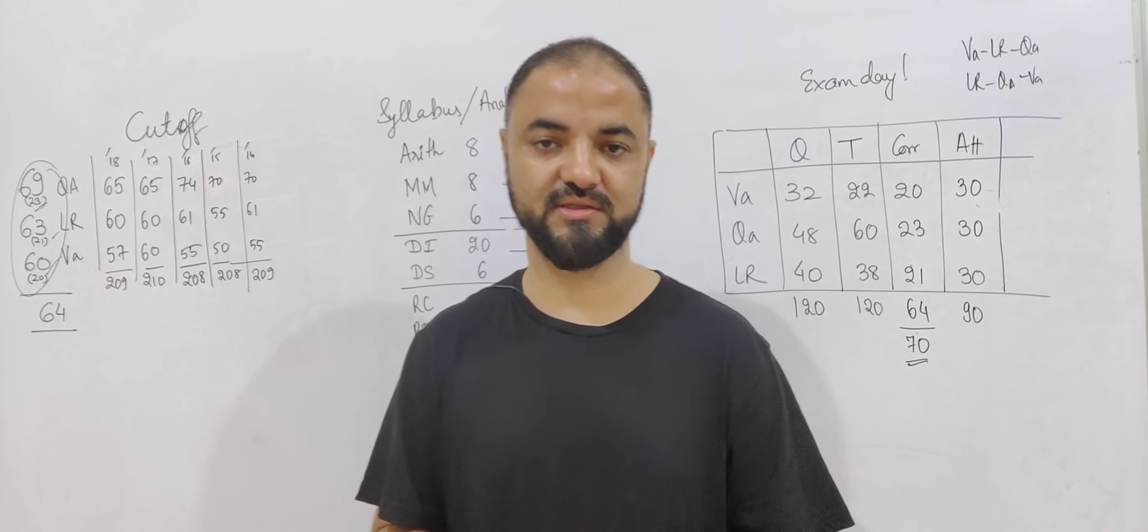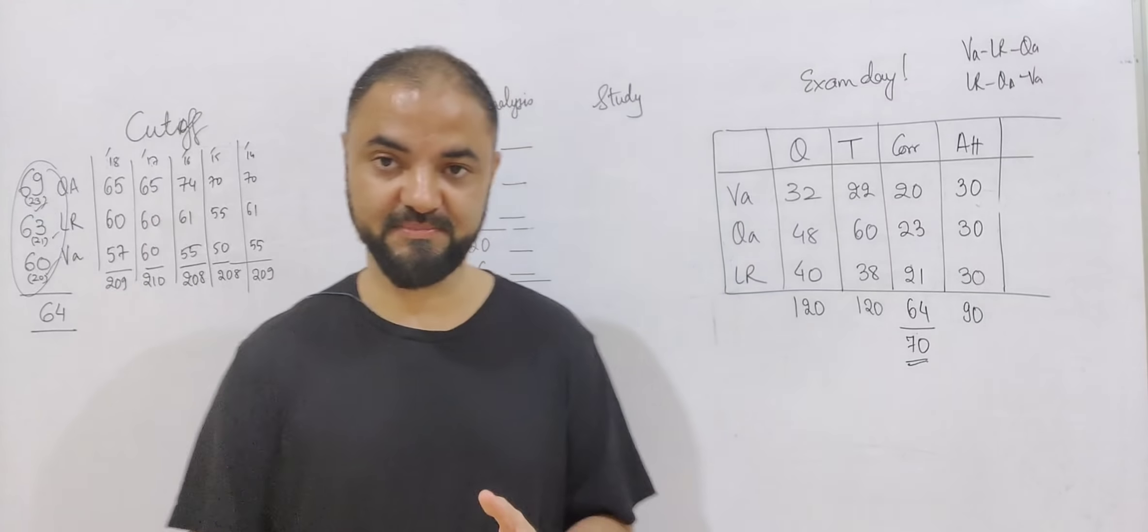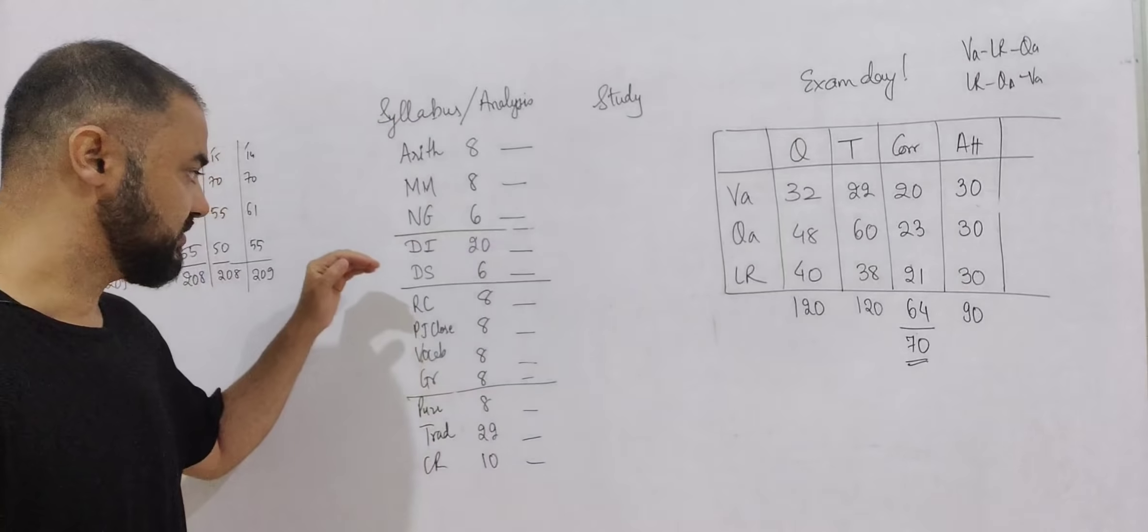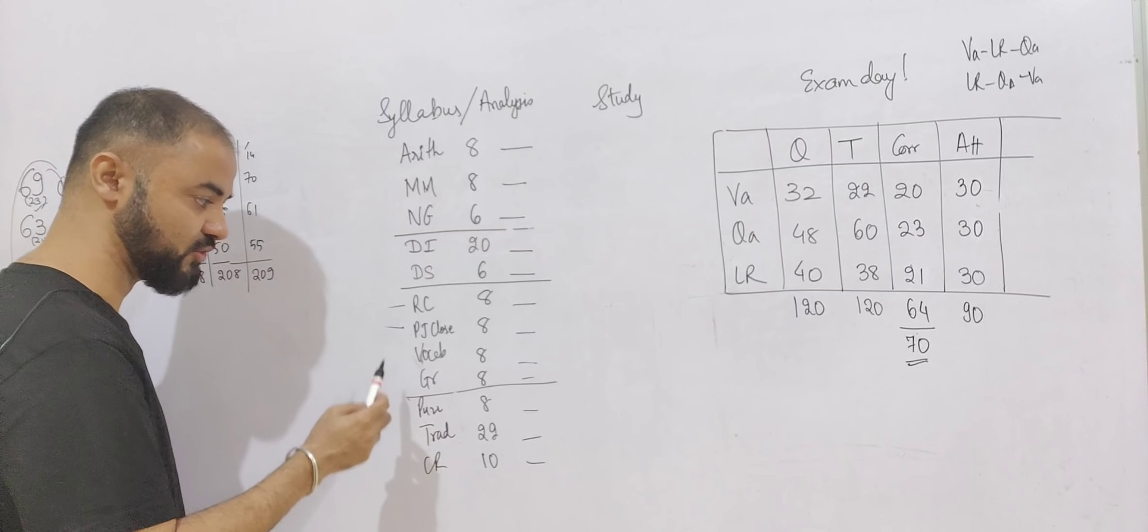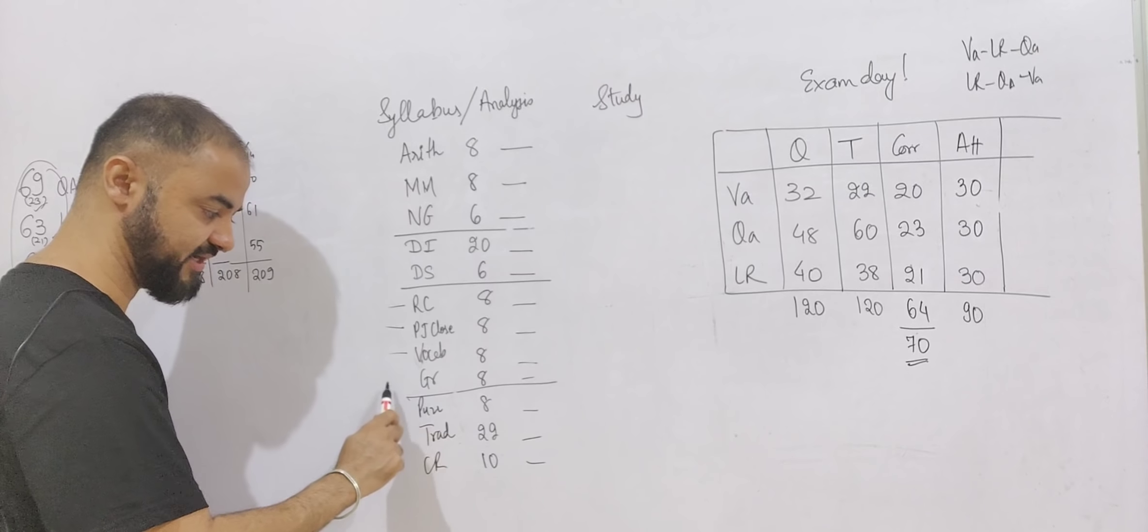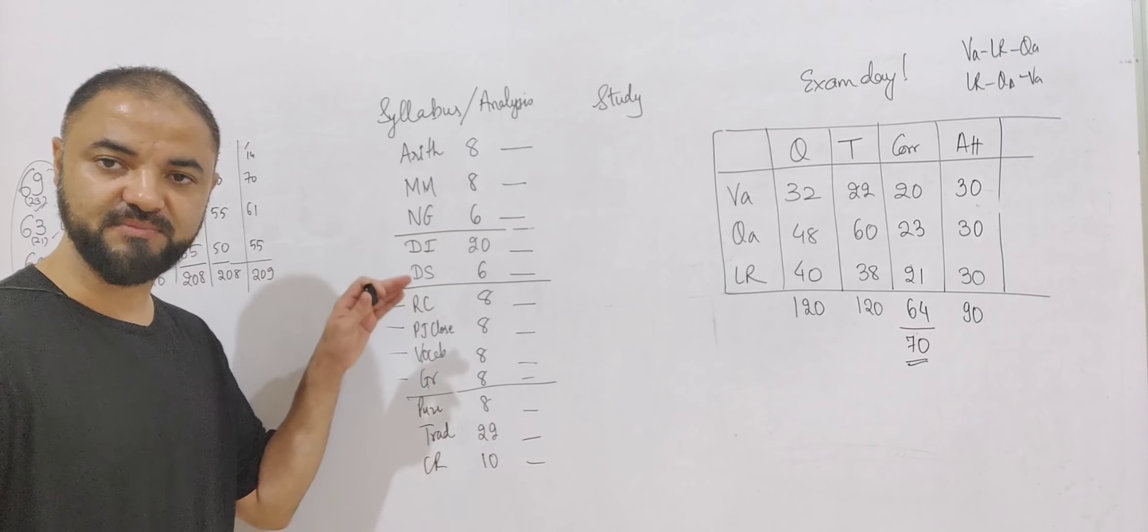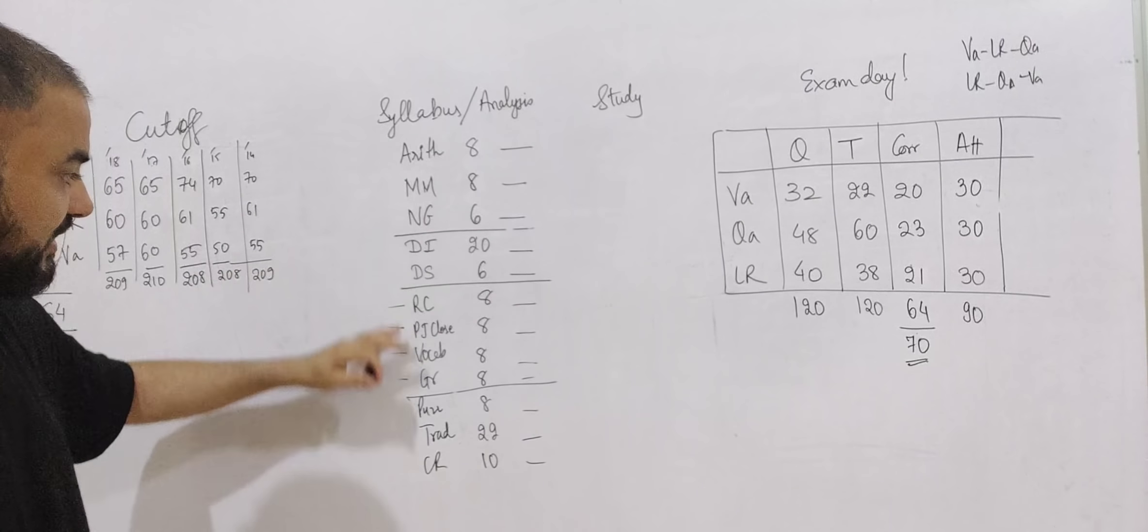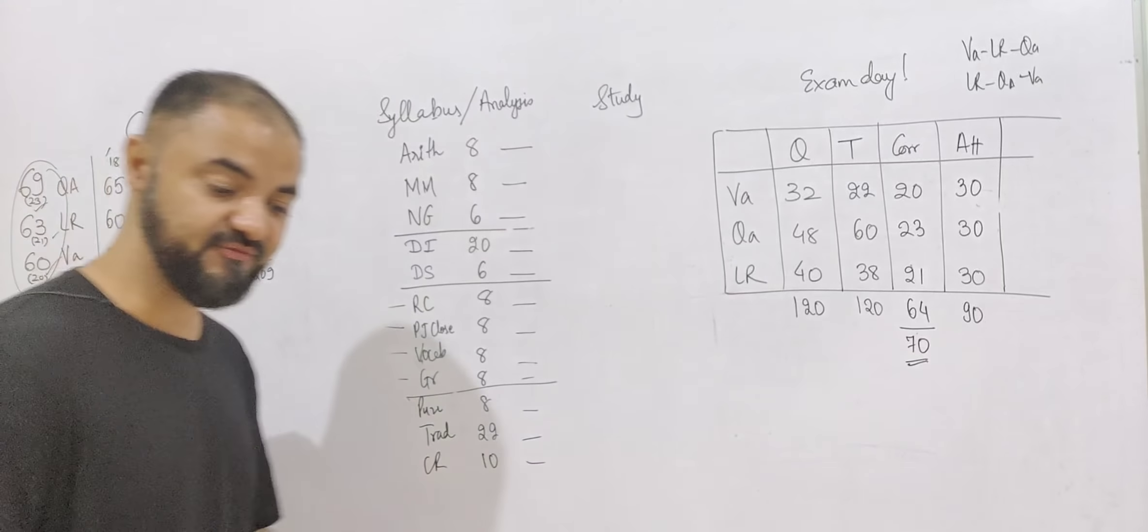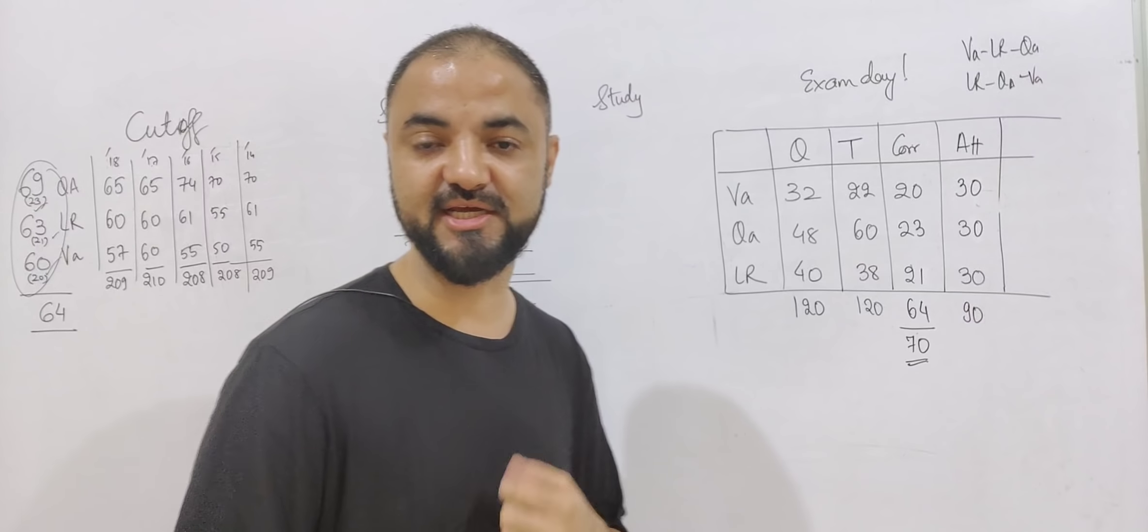Moving on to the syllabus of what kind of questions will come in the exam. Let's start with the verbal section first. RC 8 questions, para jumble close test 8 questions, vocabulary 8 questions, grammar 8 questions. So they beautifully broke them down into 4 areas. Overall I have divided NMAT into around 12 areas and we need to focus on all these 12 areas to score more marks.